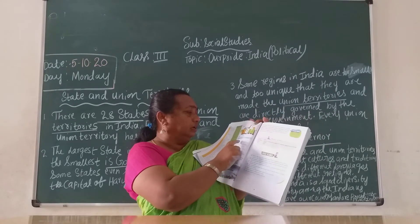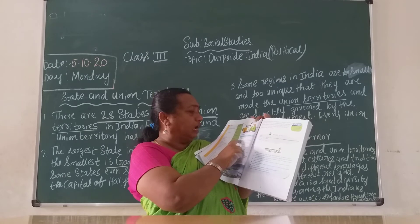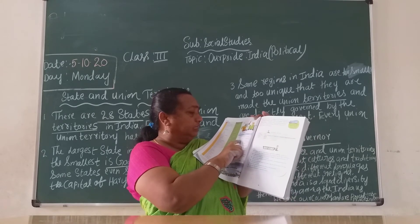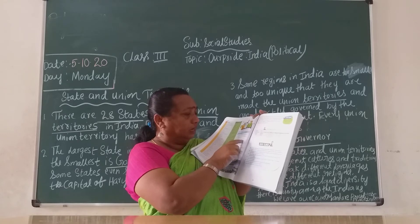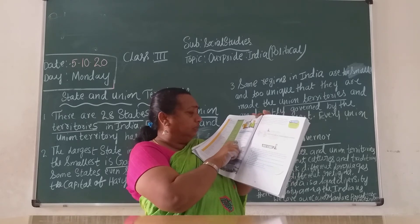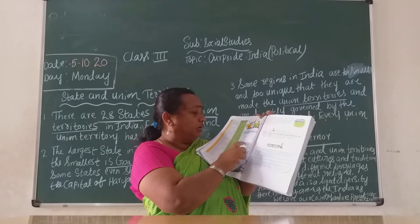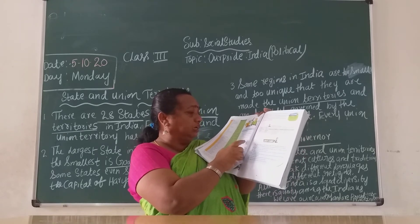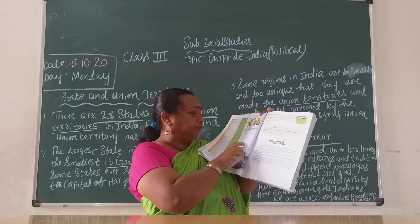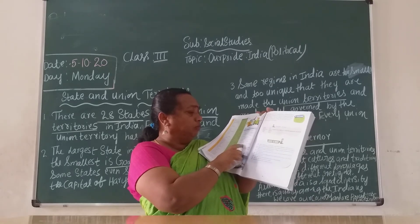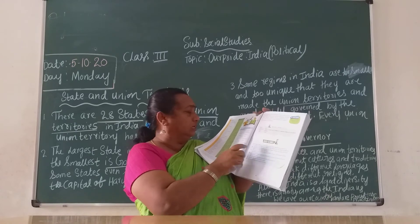Union territories children — look at this picture. Andaman and Nicobar Islands — Port Blair. Chandigarh — Chandigarh only. Lakshadweep — Kavaratti. Dadra and Nagar Haveli and Daman and Diu — Daman. Puducherry — Puducherry only. National Capital Territory of Delhi — Delhi only. Jammu and Kashmir — Srinagar or Jammu. Ladakh — Leh.